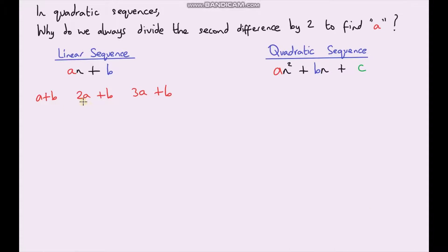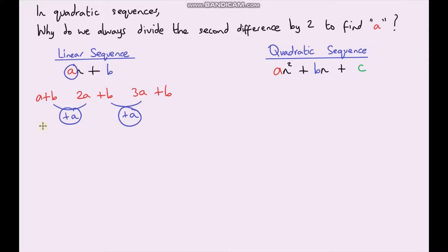Now let's find the difference between these terms. To go from a + b to 2a + b we're just adding on a, and likewise to go from 2a + b to 3a + b we're again just adding on a. So the first difference is just a, which is the coefficient in front of n. If the first difference was 3 it would be 3n; if it was 10 it would be 10n; if it was a half it would be ½n. All we're doing is substituting that number in front of n. Now let's look at a quadratic sequence and do the same thing.